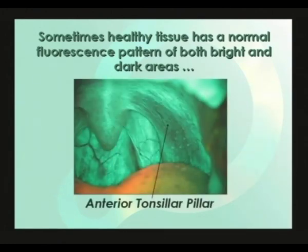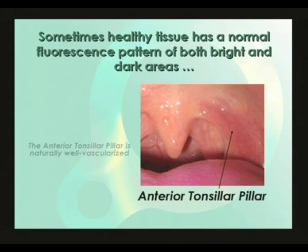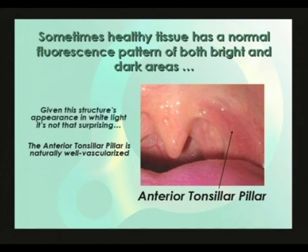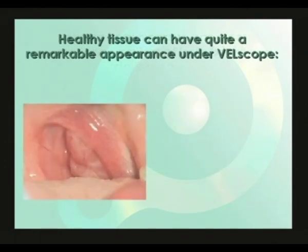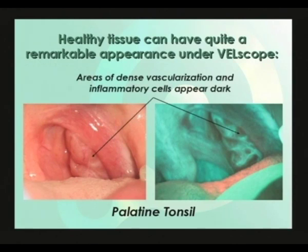The anterior tonsillar pillar typically shows up as dark under Velscope. As we can see from its appearance under white light, the anterior tonsillar pillar is naturally well vascularized, so it shouldn't be too surprising that it appears dark under Velscope. Some structures in the mouth have quite a remarkable appearance under Velscope. A good example is the palatine tonsil, where the areas of dense vascularization and inflammatory cells appear quite dark.